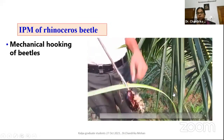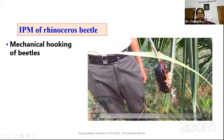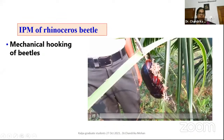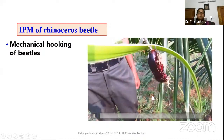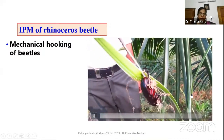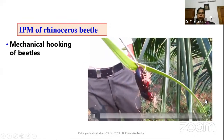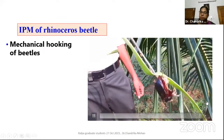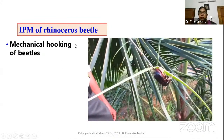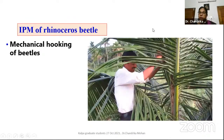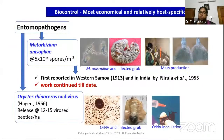If any damage symptom is there in the spindle region, first the beetle has to be hooked out, then that area has to be filled with neem cake and some fungicide. The most economical and relatively host-specific method is biological control for rhinoceros beetle.